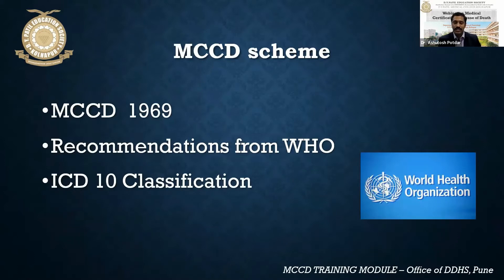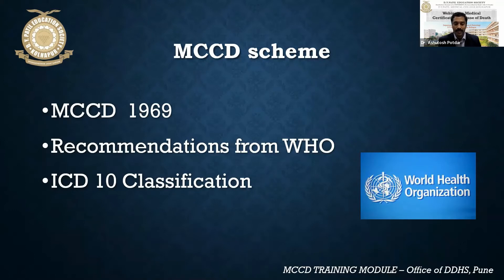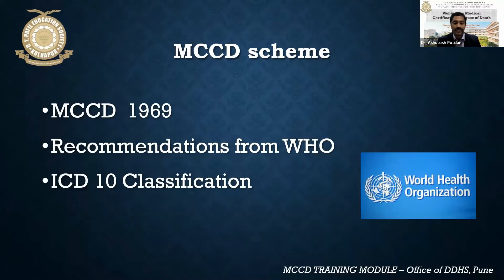The MCCD scheme was launched in India in 1951, first time in Pune city, and later phased out in various metro cities, coming into force across India in 1969. This MCCD scheme is based on recommendations from the World Health Organization. The basic concept is that whatever deaths are certified across the globe should be reported in the same format. Two forms have been given: Form 4 for institutional deaths and Form 4A for non-institutional deaths. Death certification has to be done based on the International Classification of Diseases, 10th edition.